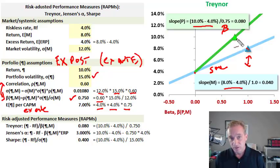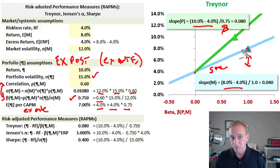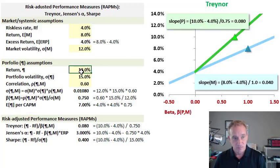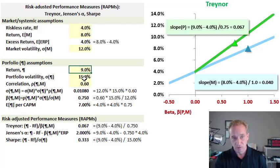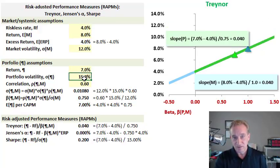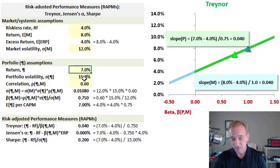We got a Traynor of 0.08, and visually you can see it's double the reference—the line is much steeper. If the portfolio return were brought down to 9%, the slope would become more shallow; at 8%, it's closer to the SML; and at 7%, it's exactly what CAPM expects—right on the security market line.